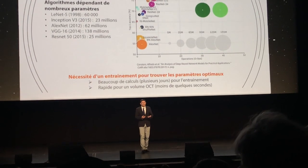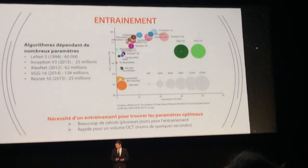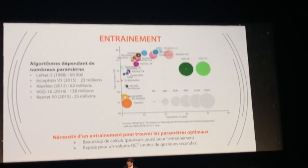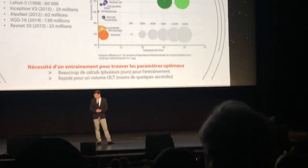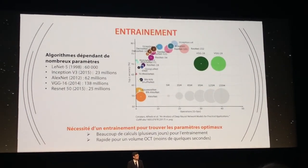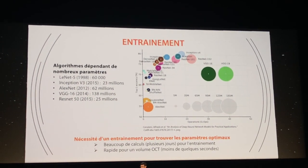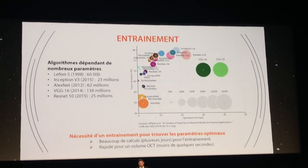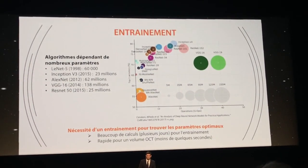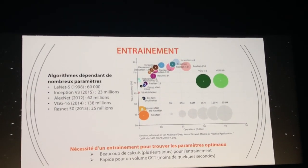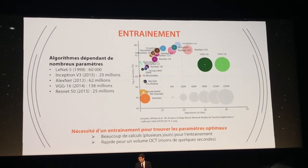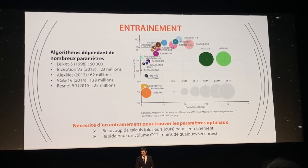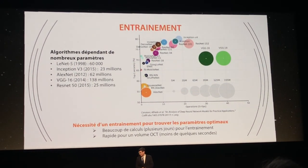To function, these networks require a large number of parameters, as you can see in this illustration. Some networks, like VGG19, exceed 150 million parameters that need to be adjusted. It is completely illusory to adjust them manually, so we proceed with a training phase to find these optimal parameters.